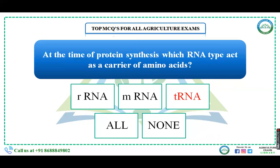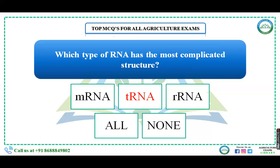At the time of protein synthesis, which RNA type acts as a carrier of amino acids? Since protein is the polymer of amino acids, during protein formation the RNA that acts as a carrier for amino acids is transfer RNA, or tRNA. Additionally, tRNA has the most complicated structure among all RNA types.